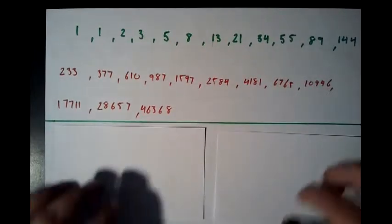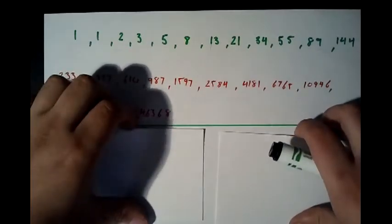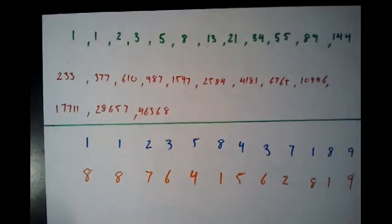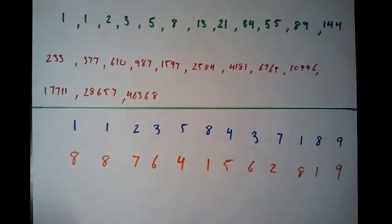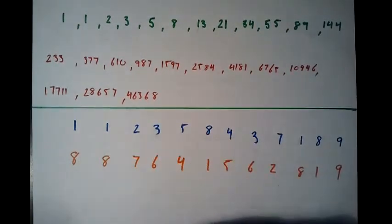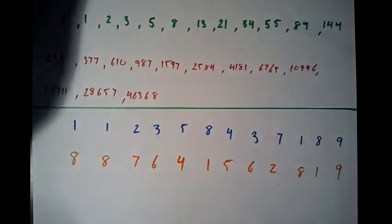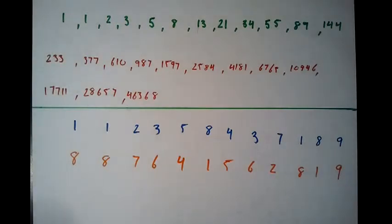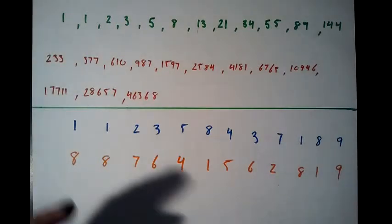Now let's remove these cards and look at the numeric reductions. In blue I've written the numeric reduction for the first 12 Fibonacci numbers, and in orange I've written the numeric reduction for the next 12.